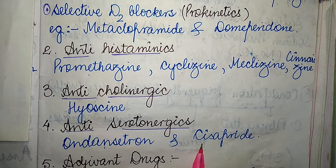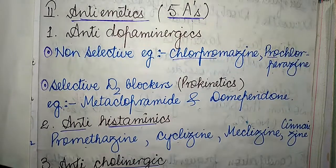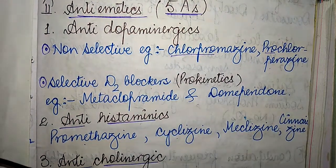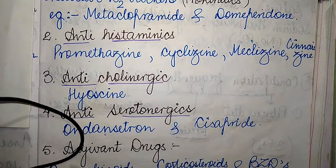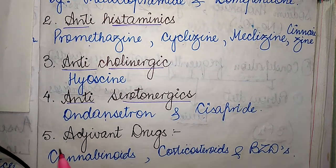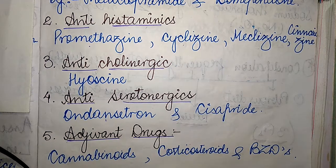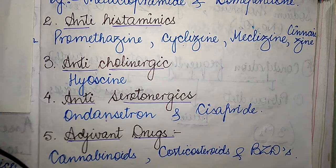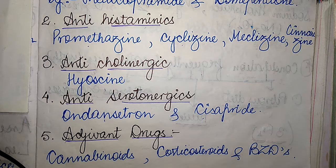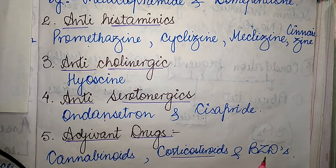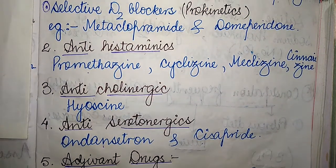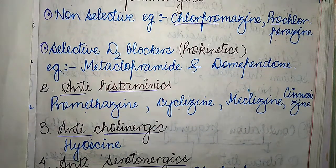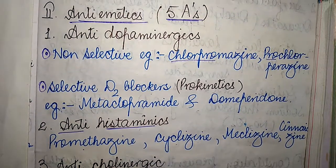The fifth A corresponds to adjuvant drugs, which includes a wide variety such as cannabinoids, corticosteroids, and benzodiazepines. To summarize, the classification of anti-emetic drugs can be easily remembered using the five A's.